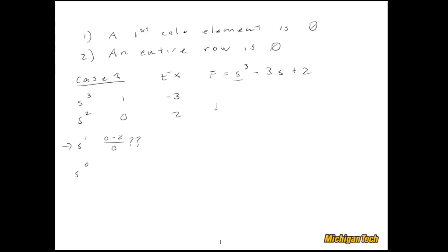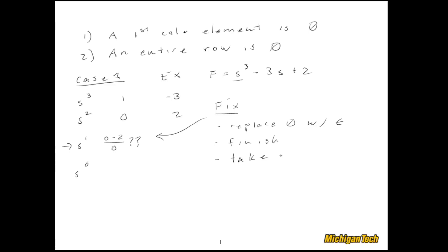Here's the fix: we replace the zero with epsilon, then finish the Routh array, and finally to analyze the first column we take the limit as epsilon goes to zero.